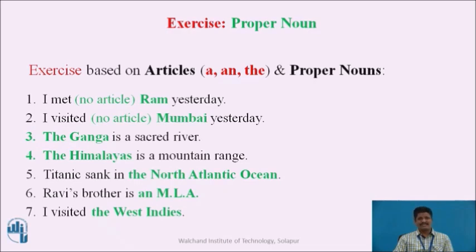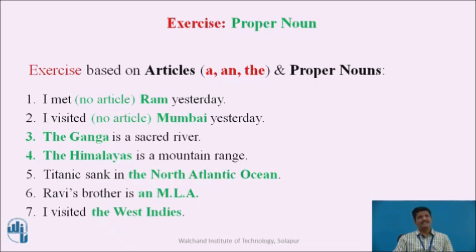In sentence 2, 'I visited Mumbai yesterday' — Mumbai is a proper noun, so no article is used. In sentence 3, 'The Ganga is a sacred river' — Ganga is a proper noun, and generally we do not use articles with proper nouns. However, this is an exception: proper nouns relating to water bodies always take the definite article 'the.' Hence it is 'the Ganga,' 'the Brahmaputra,' 'the Indian Ocean,' 'the Arabian Sea,' 'the Bay of Bengal,' 'the Red Sea,' 'the Baltic Sea.' In sentence 4, 'The Himalayas is a mountain range' — we use 'the' before proper nouns denoting a mountain range, such as the Sayadris, the Satpuras, and the Vindhyas.